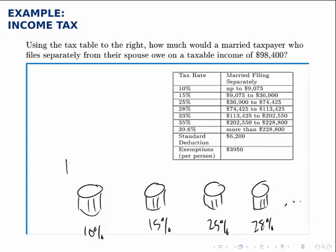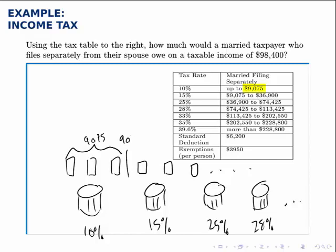Above these barrels you line up all of your money from dollar number one all the way up to dollar number 98,400. The first $9,075 — everything from dollar one through dollar 9,075 — goes into the first barrel. Then the next dollars up through dollar 36,900 go into the second barrel, and everything up to dollar 74,425 goes into the third barrel. Each dollar only goes into one barrel.